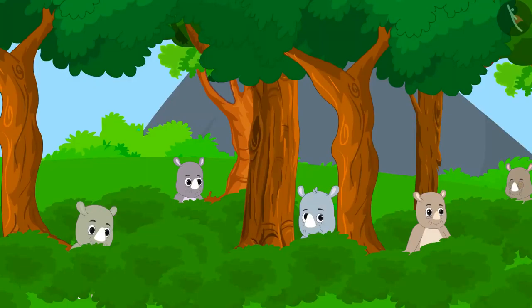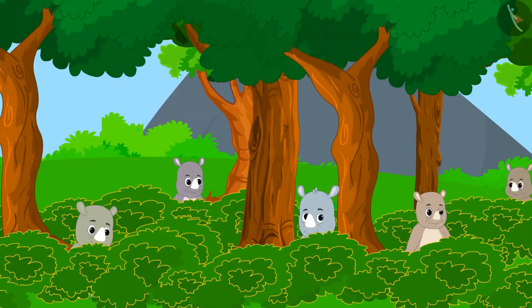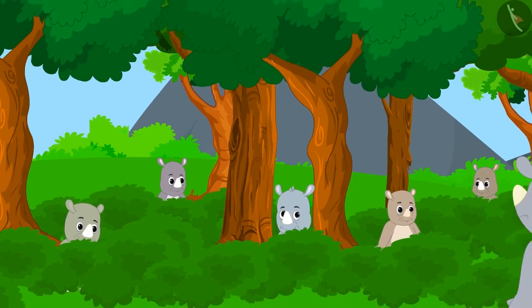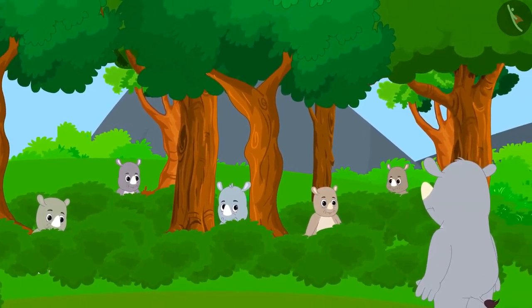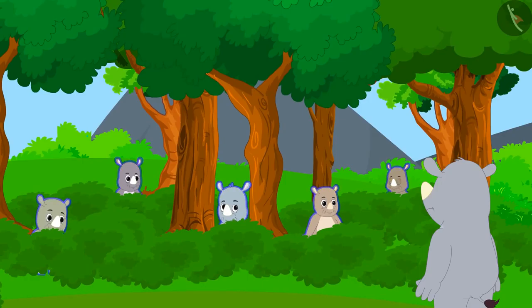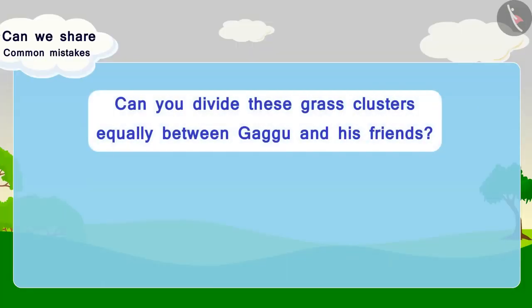There are 36 clusters in total. Can you divide these grass clusters equally between Gaggoo and his friends? Can you choose the correct option from the options given below?